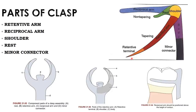The retentive arm engages the undercut on the abutment and is designed to retain the denture. The retentive terminal is flexible and engages the undercut below the height of contour, while the retentive arm is rigid and remains above the height of contour.